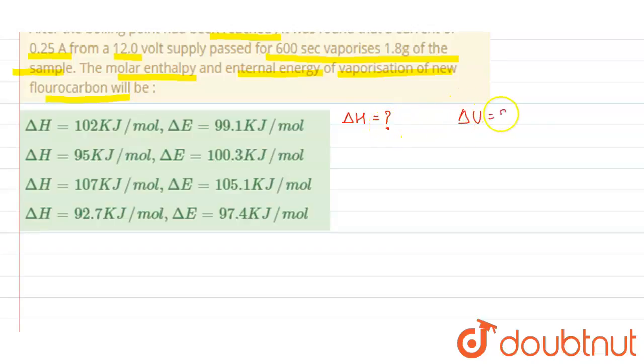First of all, we know that power is equals to potential into current. Also we know that power is equals to energy upon time. So from this we can write that energy is equals to power into time, and here from this equation, power is VI, so energy will be equals to VIt.